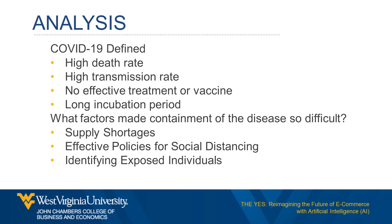Another reason COVID-19 is more dangerous than the flu is that there is no effective treatment or vaccine. Because no effective treatment or vaccines existed as of April 2020, the majority of the population was still susceptible to infection with no way to create herd immunity unless a critical mass within the population had been infected by the virus.